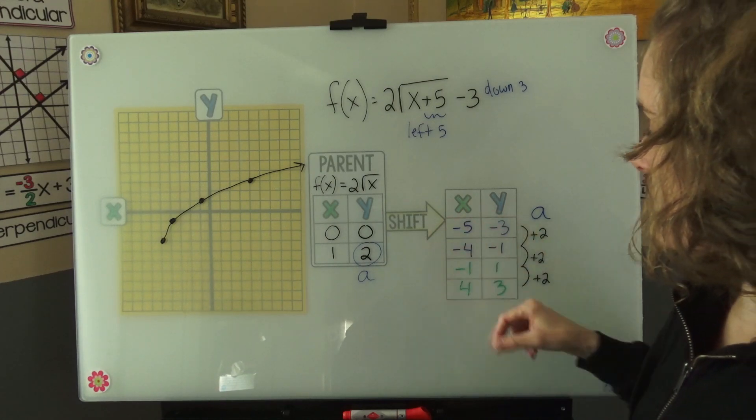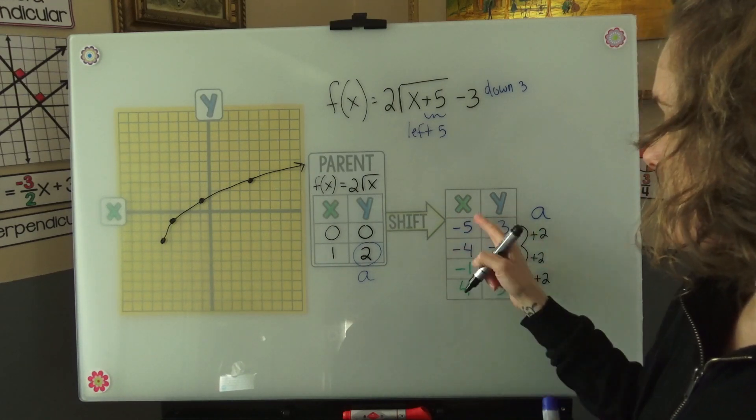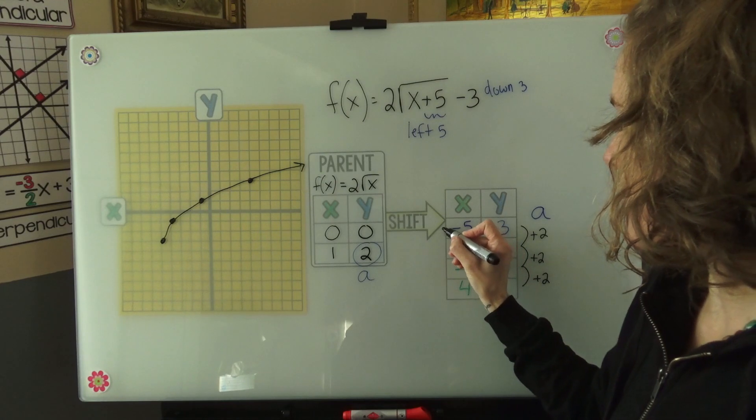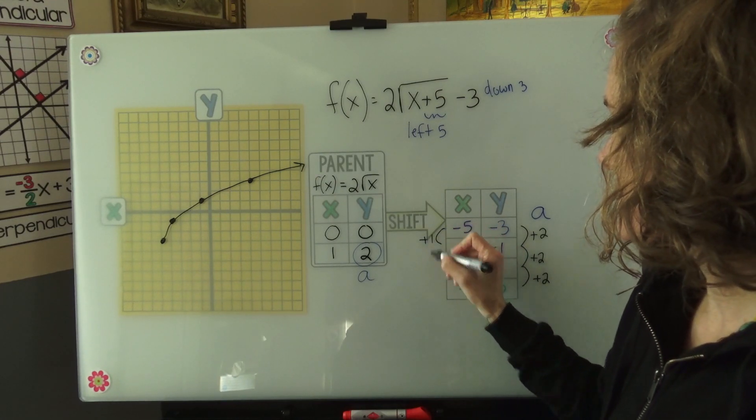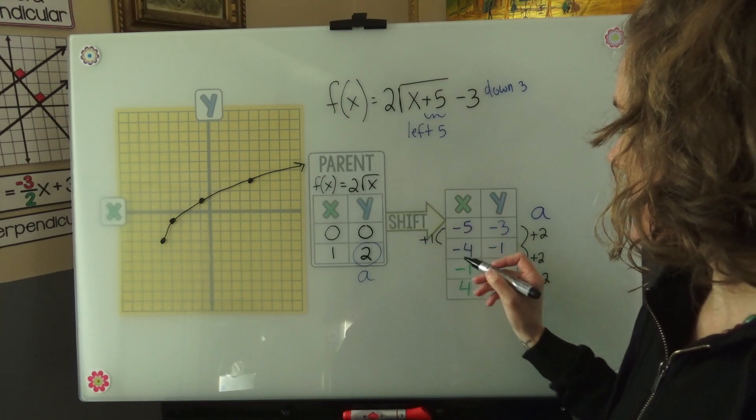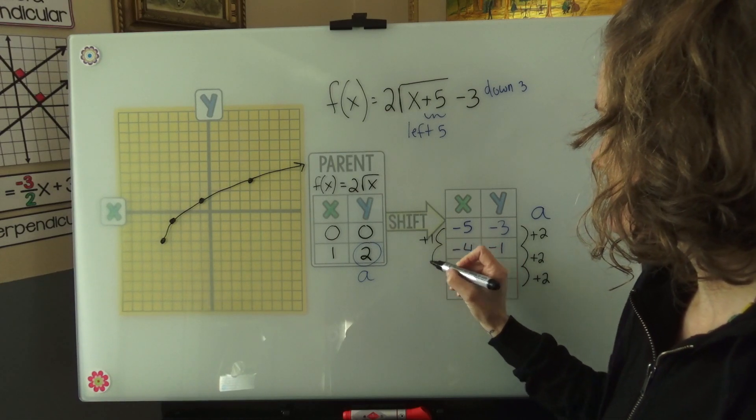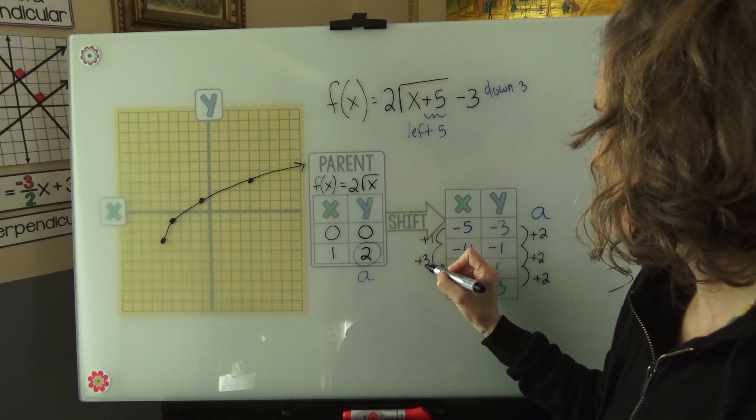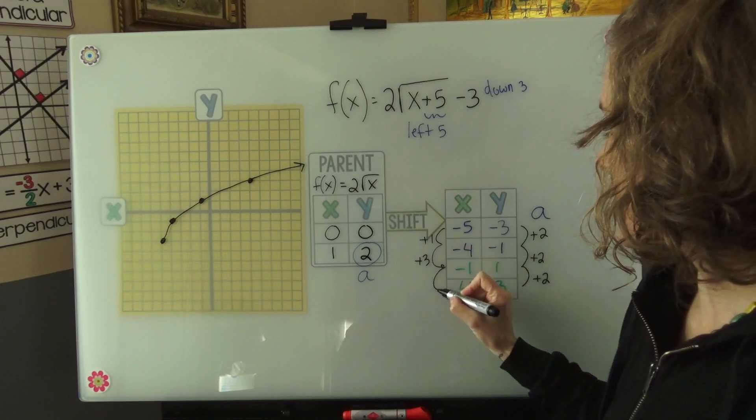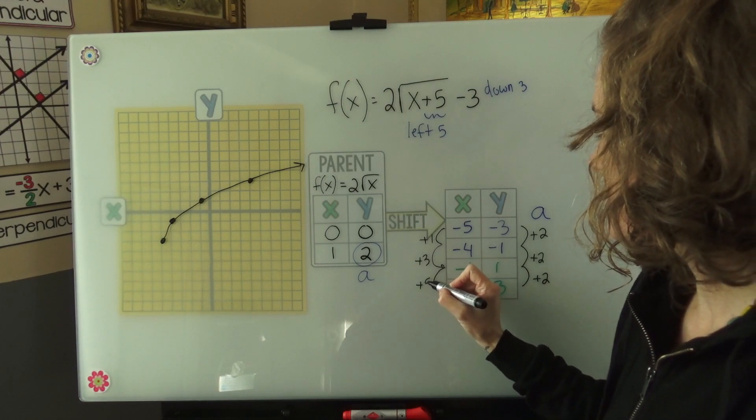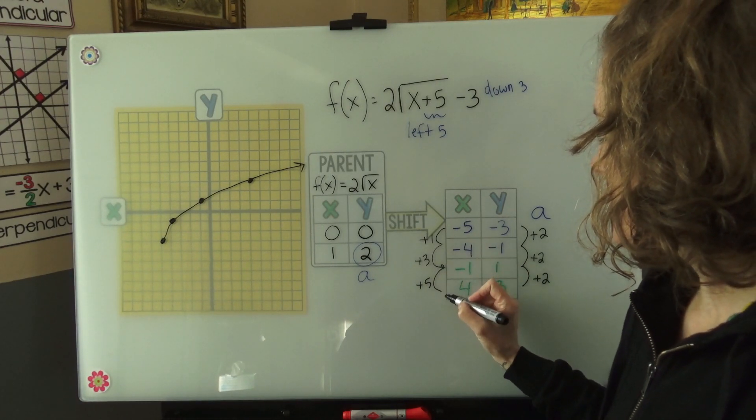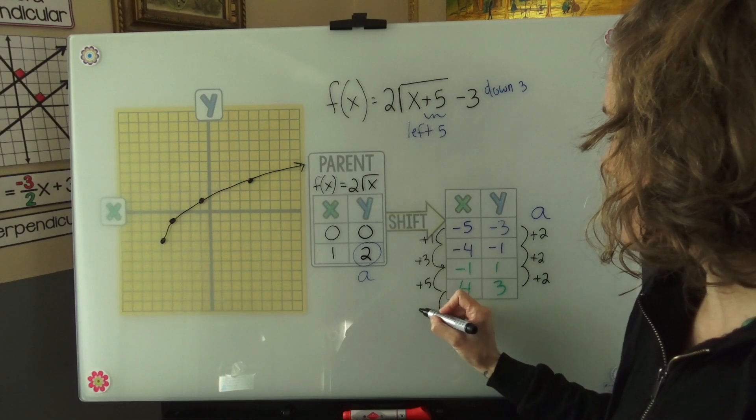Now let's look at what we have going on over here. From negative 5 to negative 4, we go up 1. From negative 4 to negative 1, we go up 3. And from negative 1 to 4, we go up 5. 1, 3, 5. The next would be to go up 7.